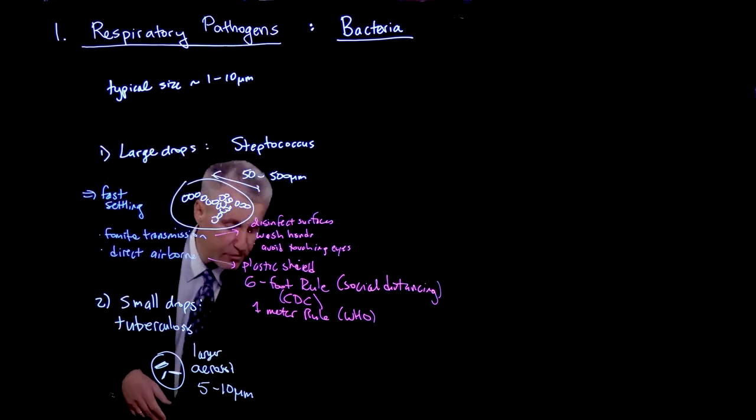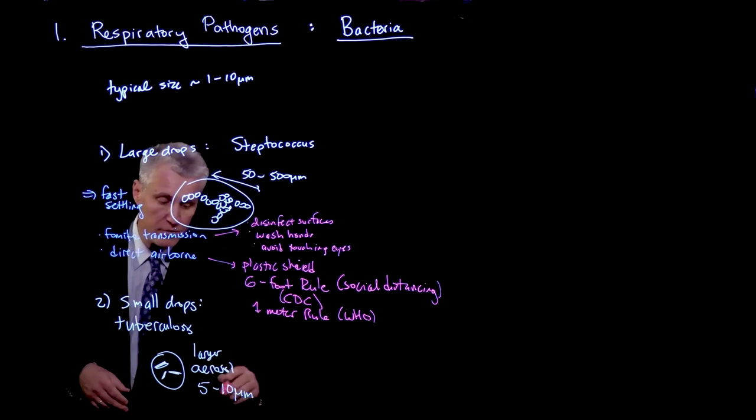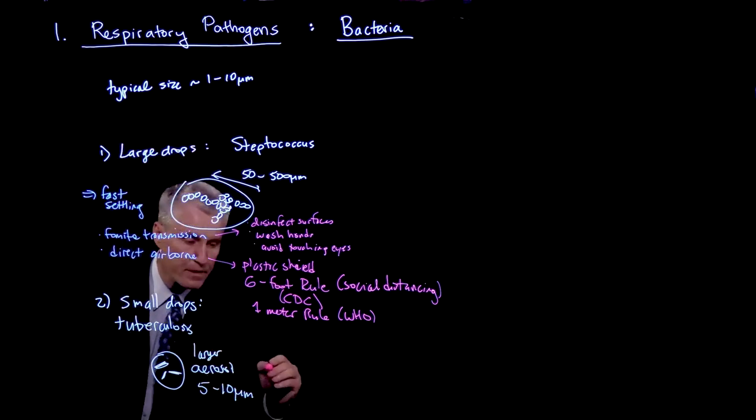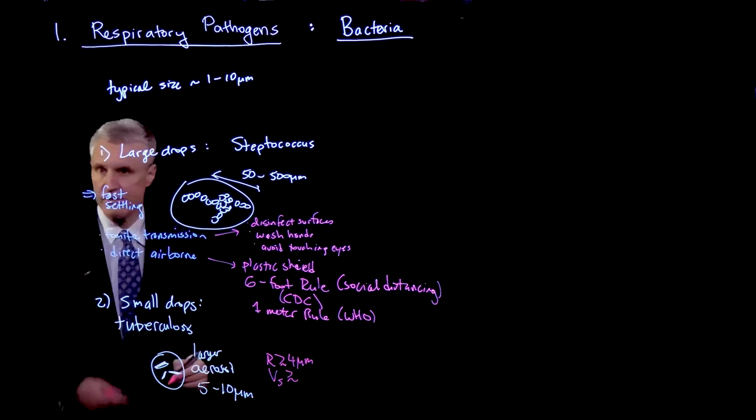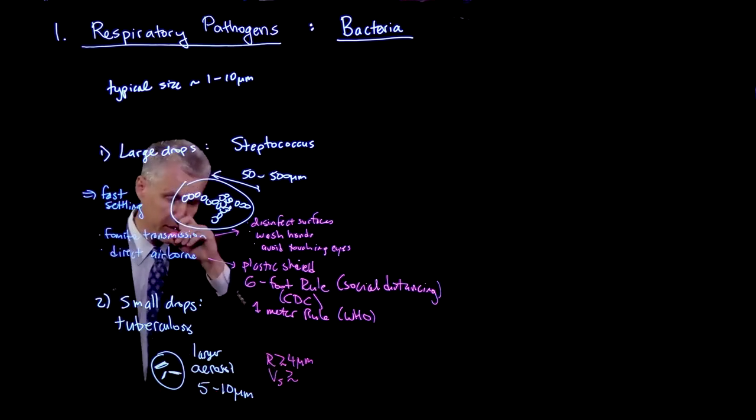And in fact, that is what is found. If you have this size of droplet, then it turns out, for example, if my radius is, let's say, greater than 4 microns, then the settling velocity you can find, given the density of aqueous fluids, is around 2, bigger than 2 millimeters a second.